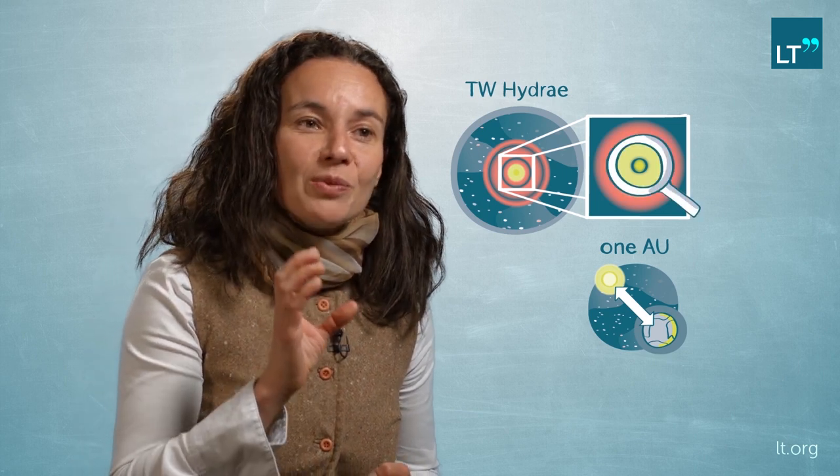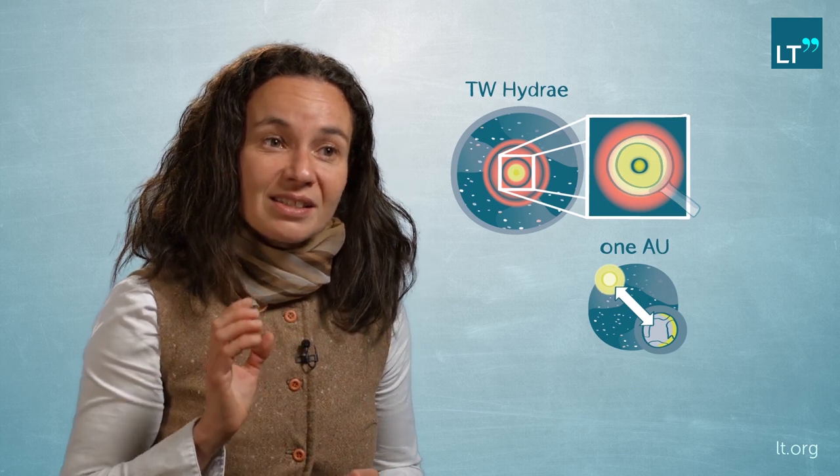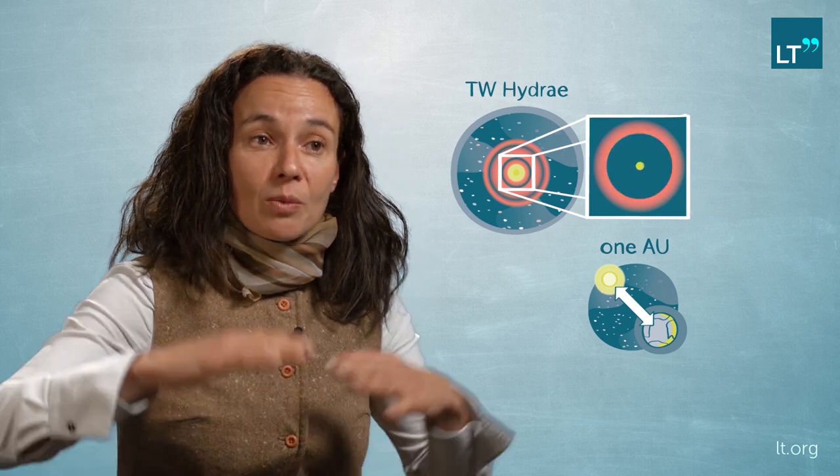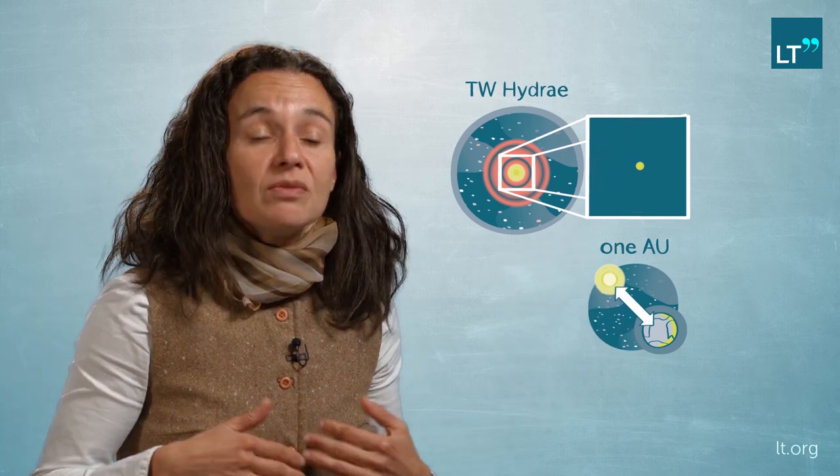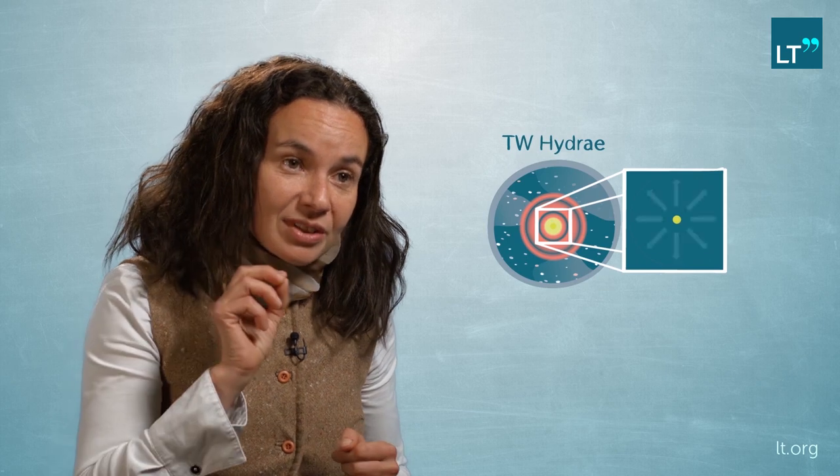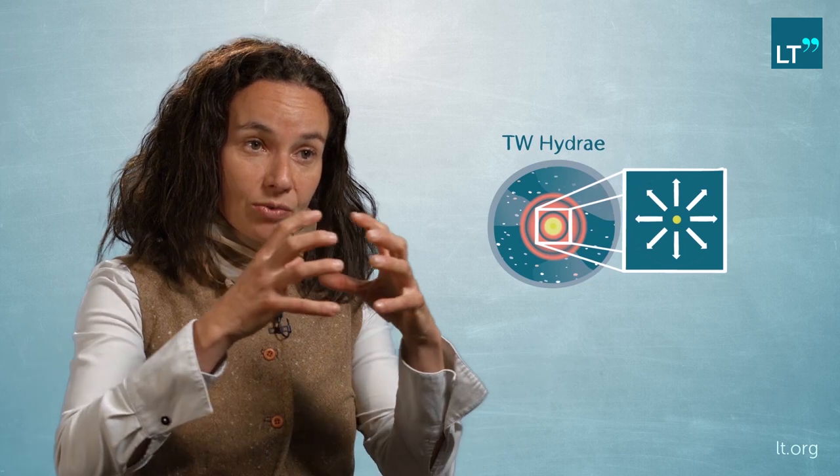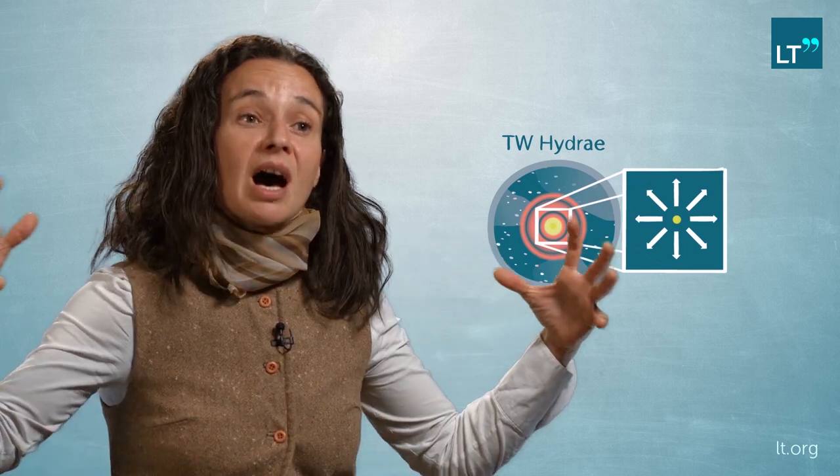And we want to know, is this hole a sign that this disk is being blown away from the central star. In fact, it's being photo-evaporated from the central star. We want to know, is radiation from the central star hitting the disk, causing a wind, and this wind is now eroding the disk from the inside out.